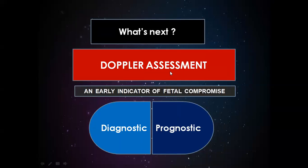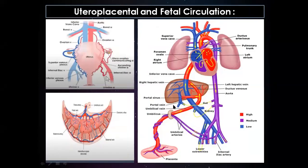Doppler is the earliest indicator of fetal compromise and gives both diagnostic and prognostic guidance in the management of FGR. The uterus is supplied by the uterine artery and the placenta has two compartments — maternal and fetal. The fetus receives oxygenated blood through the umbilical vein, which passes through the ductus venosus and is shunted to the left atrium, supplying the fetal brain and upper body.